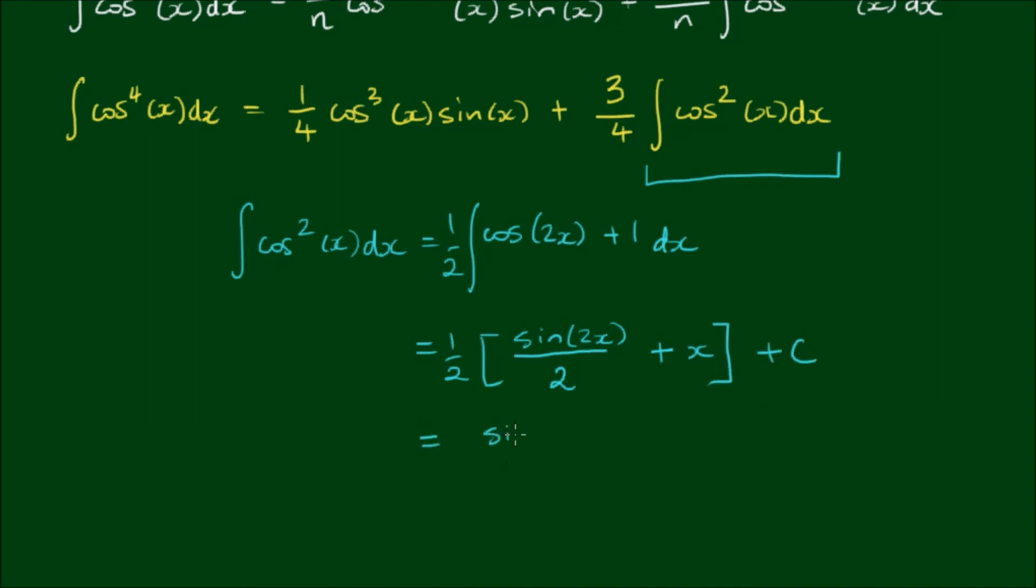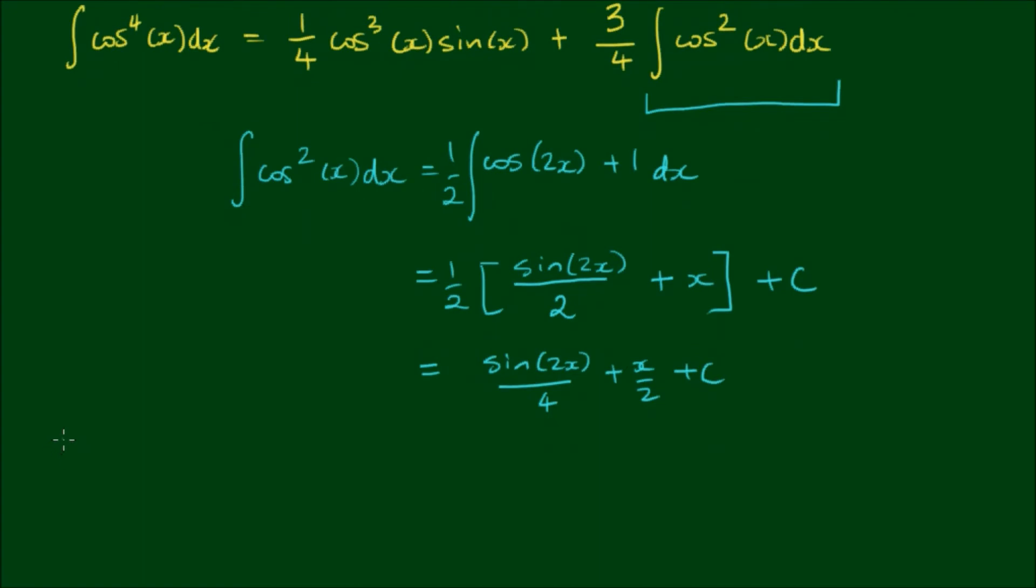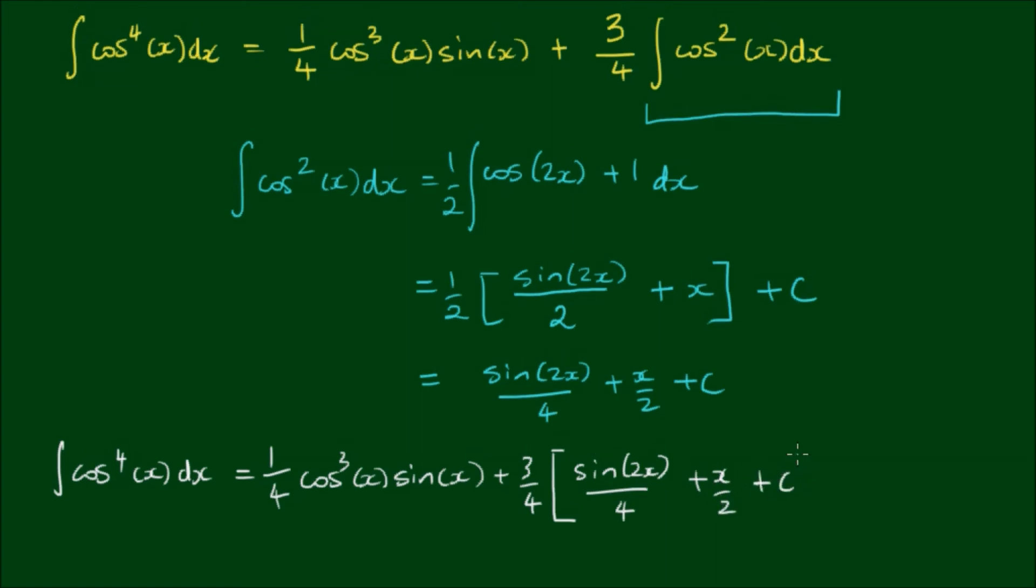So putting this into our final result, we have the integral of cosine to the 4th power of x with respect to x is equal to 1 fourth or a quarter of cosine to the 3rd power of x by sine of x plus 3 quarters. And in brackets, I have sine of 2x on 4 plus x on 2 plus c.